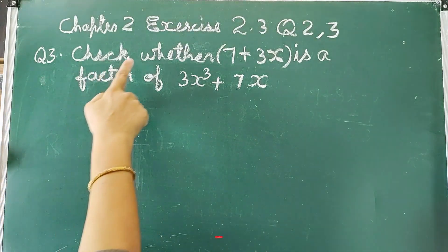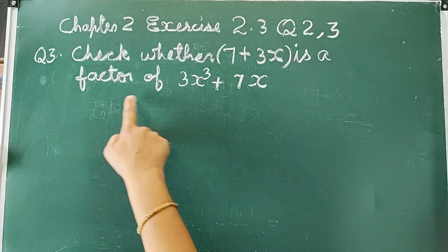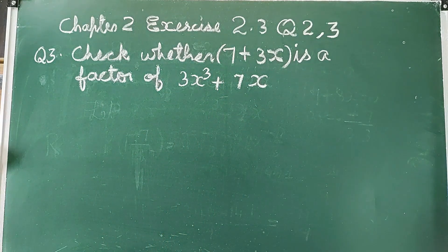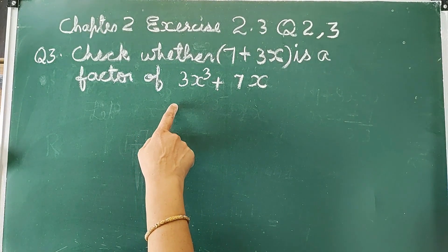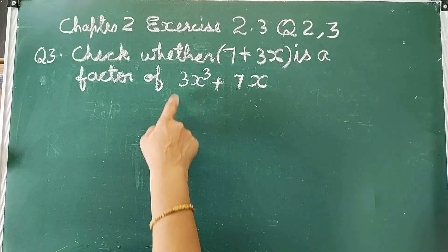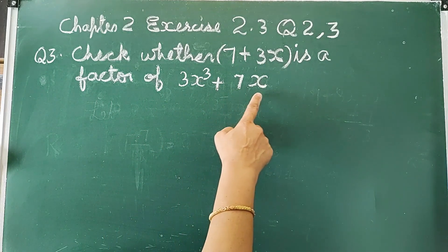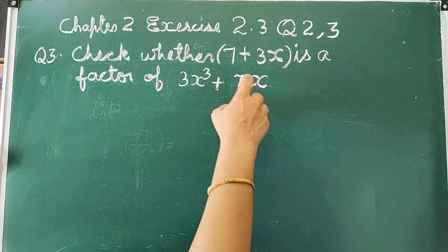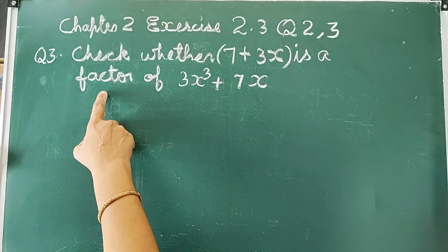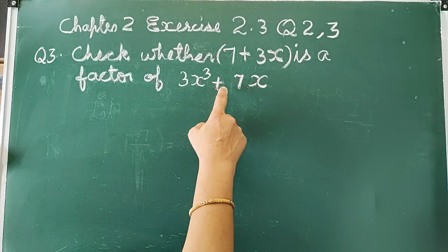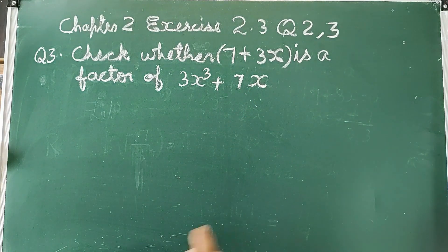Now, Question No. 3. Check whether 7 plus 3x is a factor of 3x cubed plus 7x. In this question, we have to find whether 7 plus 3x is a factor of 3x³ + 7x. If 7 plus 3x is a factor, then the remainder will be 0.